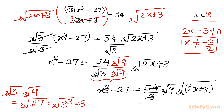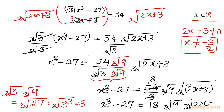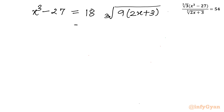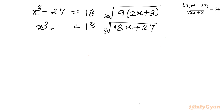Now I insert cube root of 9 into cube root of (2x + 3). We can write: x³ - 27 = 18 times cube root of (9 · (2x + 3)), which simplifies to 18 times cube root of (18x + 27). The left-hand side remains x³ - 27.